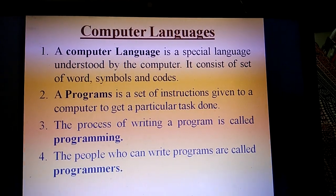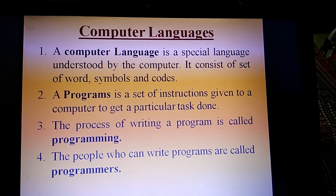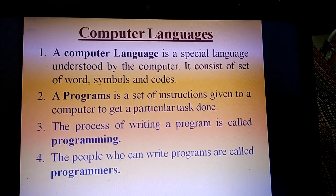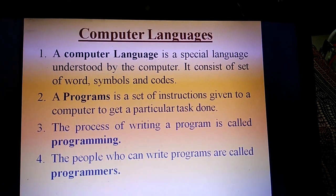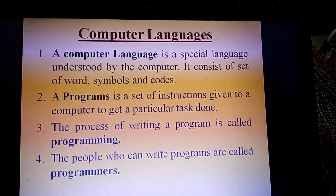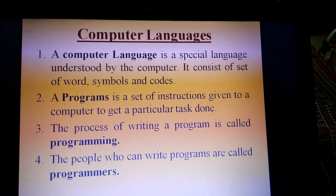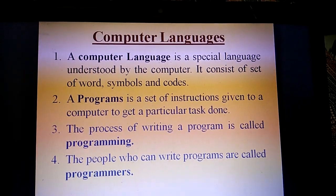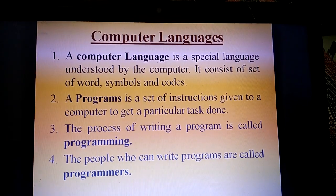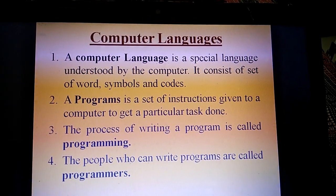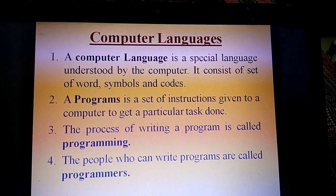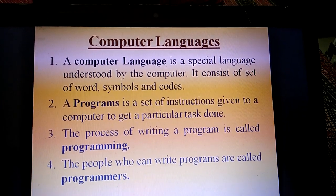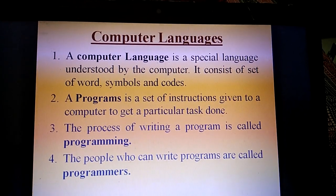The first definition is computer language. A computer language is a special language understood by the computer, and it consists of a set of words, symbols, and codes. The second is programs. A program is a set of instructions given to a computer to get a particular task done.